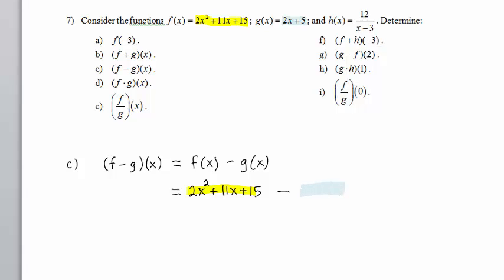Now, because G of X has more than one term, and it's being subtracted from something else, we must wrap G of X in parentheses. We distribute the minus sign, multiplying by negative 1. Negative 1 times positive 2X is negative 2X. We write minus 2X. Negative 1 times positive 5 is negative 5.